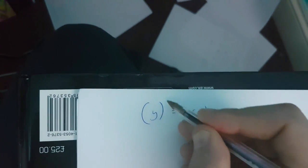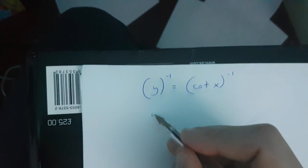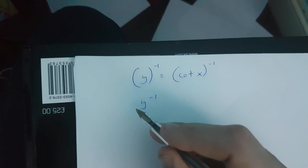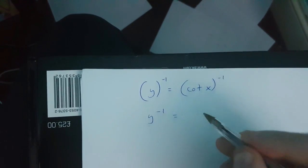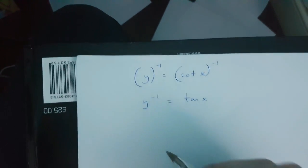Now first of all I'm going to take the inverse of both sides of this equation. If I do this what I get is y to the power of minus 1 is equal to tan x.